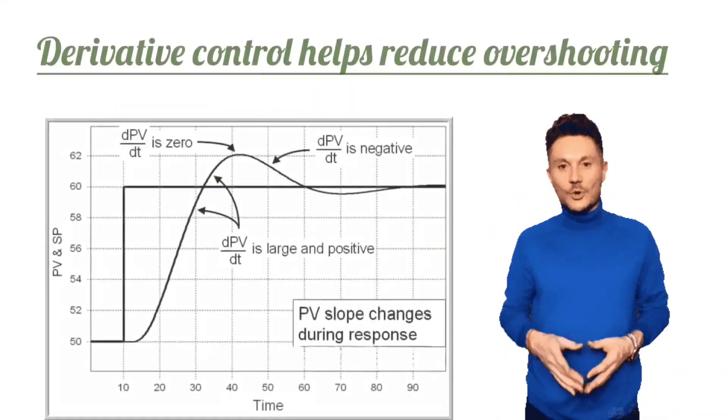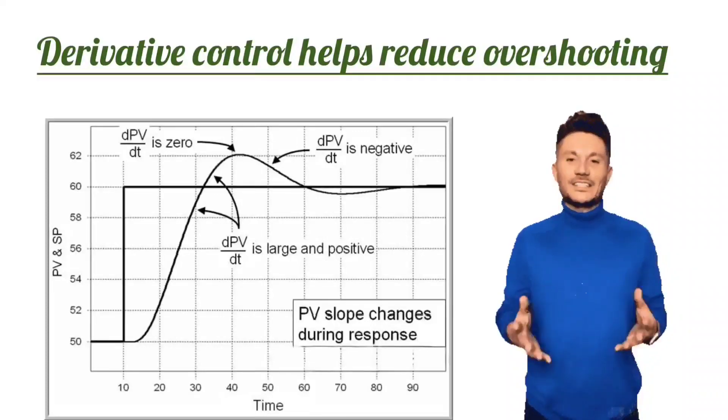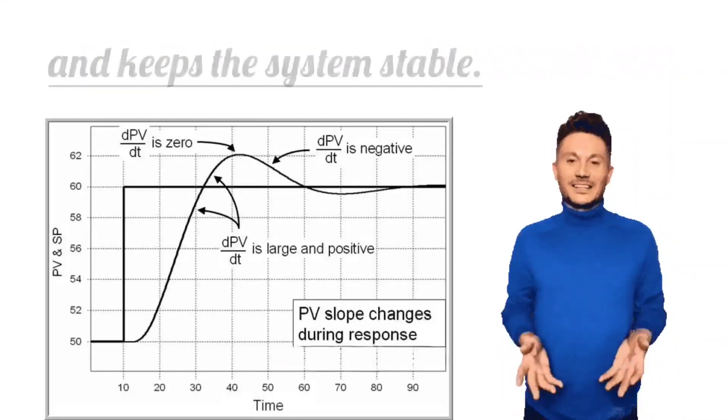Derivative control helps reduce overshooting and keeps the system stable.